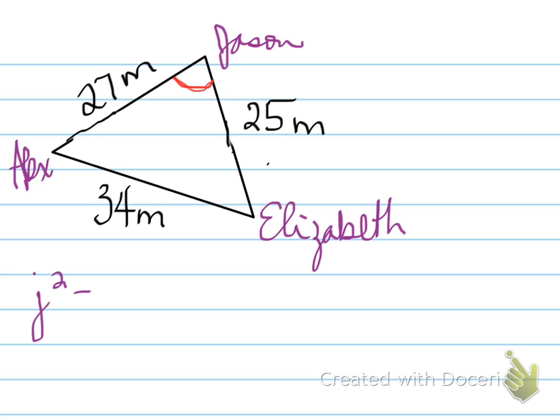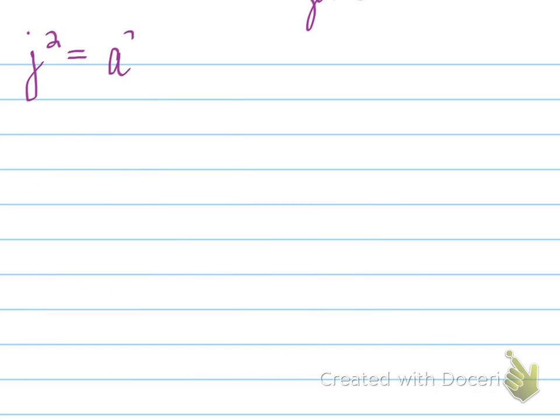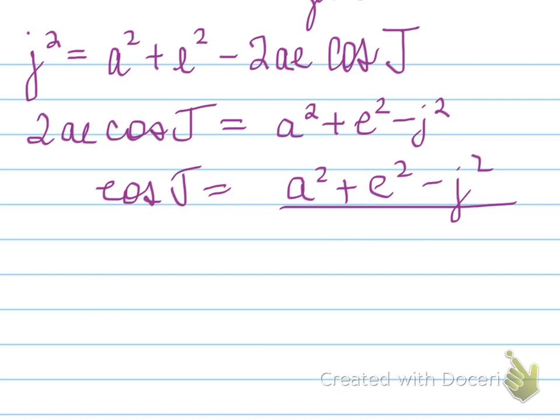So we need to find angle Jason in order to solve the problem. Angle Jason, we need to use the cosine law to solve an angle. So set up cosine law so it's J squared is equal to A squared plus E squared minus 2AE cosine J. What you do is move 2AE cosine J over to the other side so you have 2AE cosine J is equal to A squared plus E squared minus J squared. Once you do that, you can divide everything by 2AE so that you will have cosine J is equal to A squared plus E squared minus J squared all over 2AE.